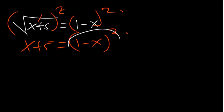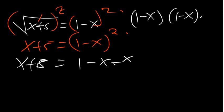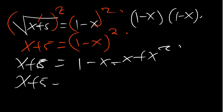So (1 minus x) squared is the same as (1 minus x)(1 minus x). Distributing: 1 times 1 is 1, 1 times negative x is negative x, negative x times 1 is negative x, and negative x times negative x is positive x squared. So this gives us x plus 5 is equal to 1 minus 2x plus x squared.